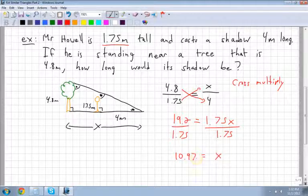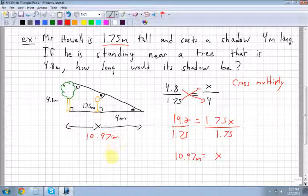And that's equal to x. That's in meters. And that is the length of the shadow of the tree. 10.97 meters.